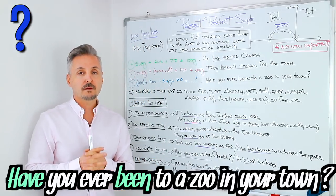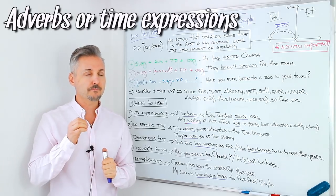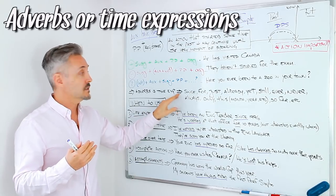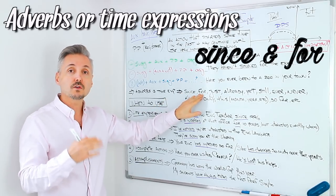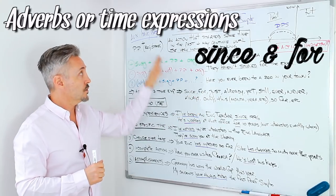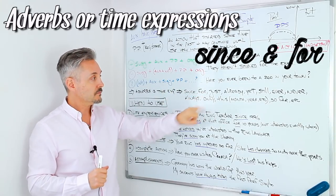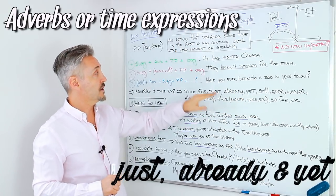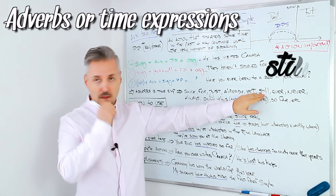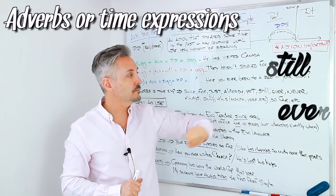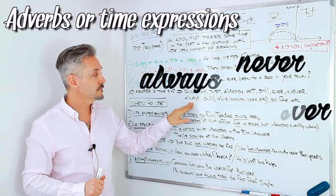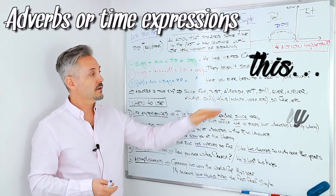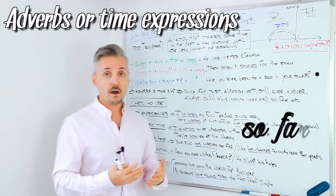We have adverbs and time expressions that we basically know we need to use them with the present perfect simple. These are since and for that we can also use with the past simple, but also with the present perfect simple. Just, already and yet, we all use them with the present perfect simple. So still, ever, never, always, only, this month, this year, this week, so far, etc.